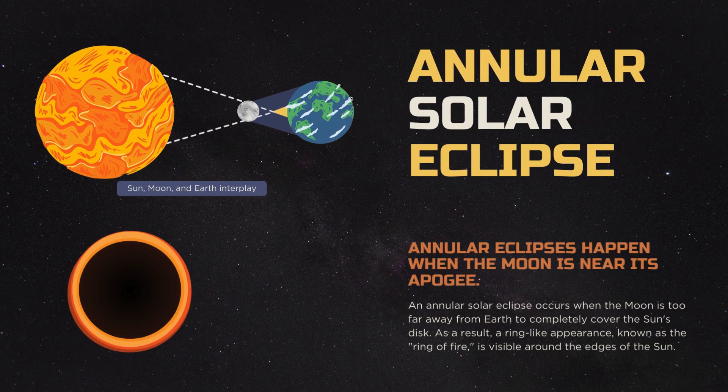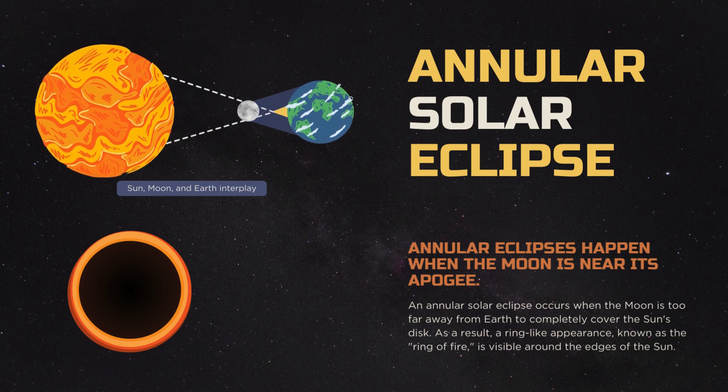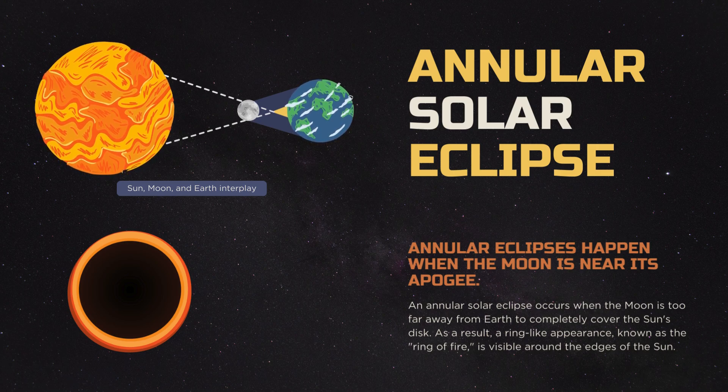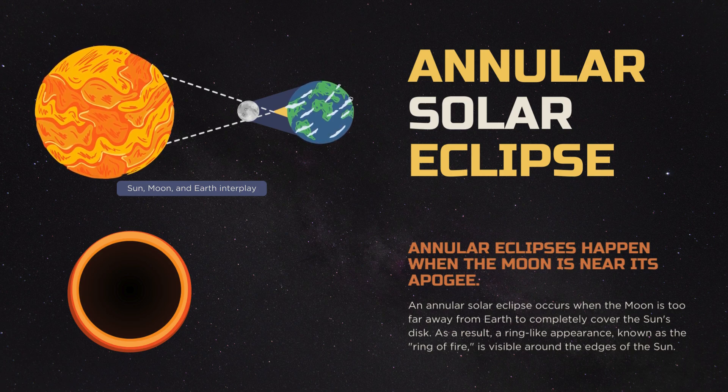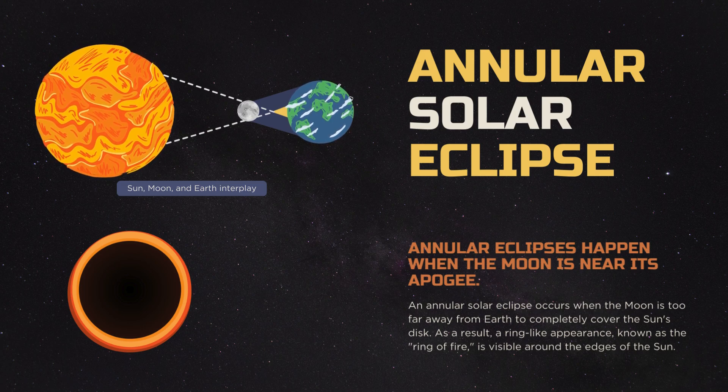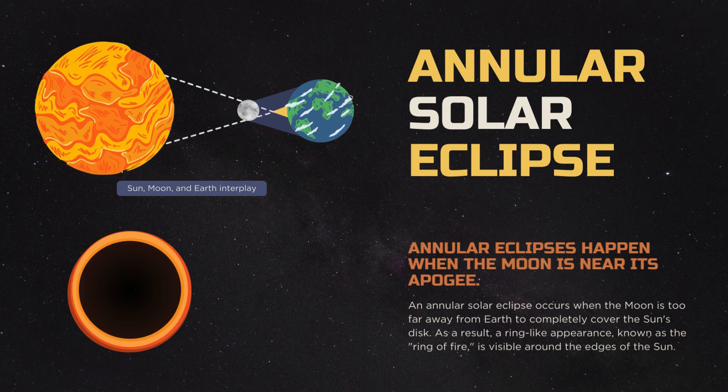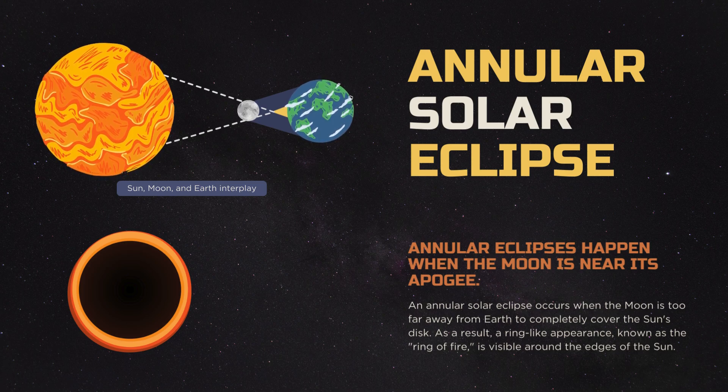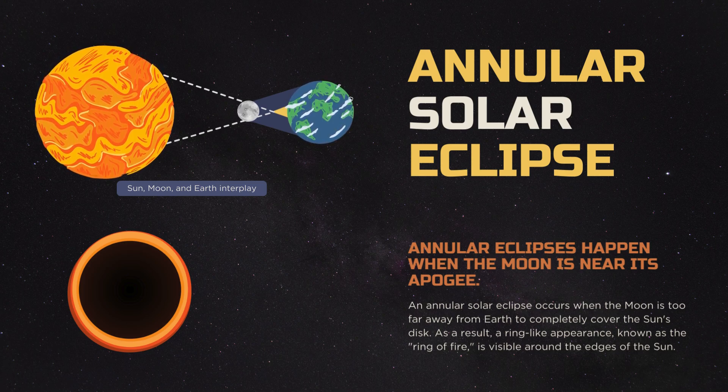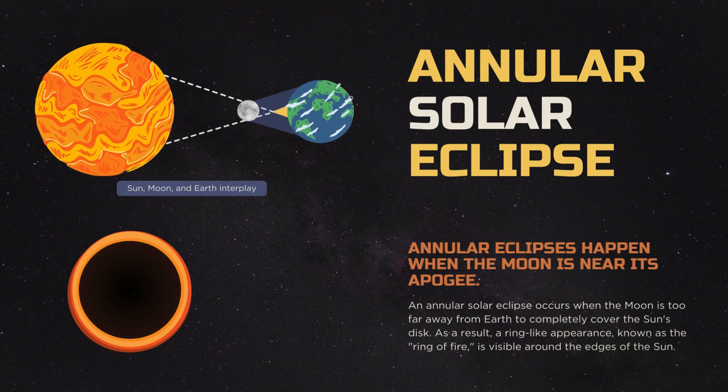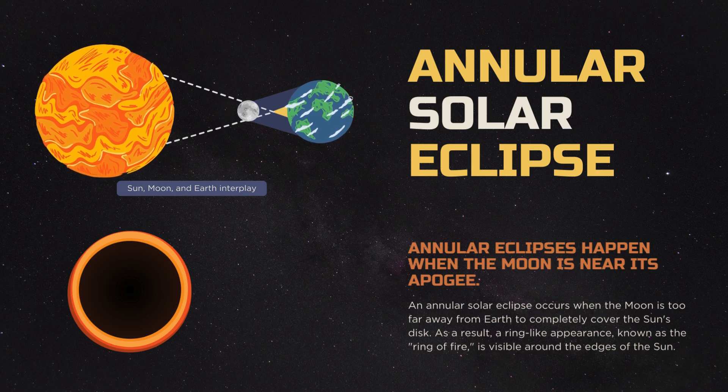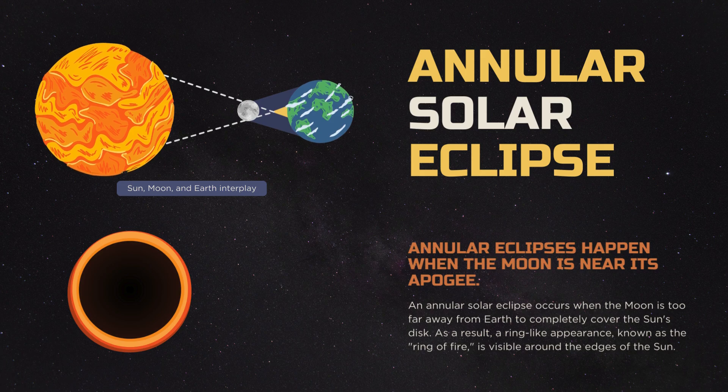A partial solar eclipse happens when the moon is near its apogee. Apogee is the furthest point in the planet's orbit. So an annular solar eclipse occurs when the moon is too far away from earth to completely cover the sun's disk. As a result, a ring-like appearance known as the ring of fire is visible around the edges of the sun. So if you see in the picture above, you will see the moon is away from the earth. So that's what will cause an annular solar eclipse.